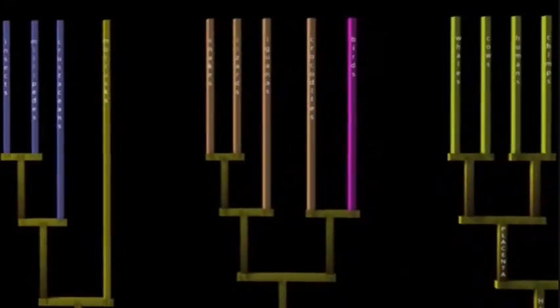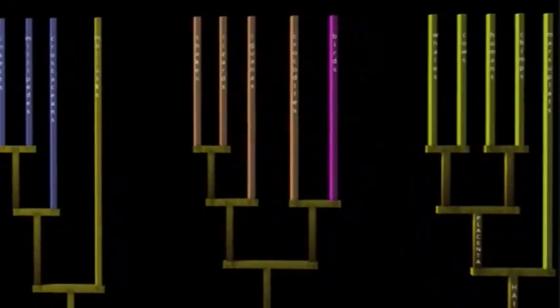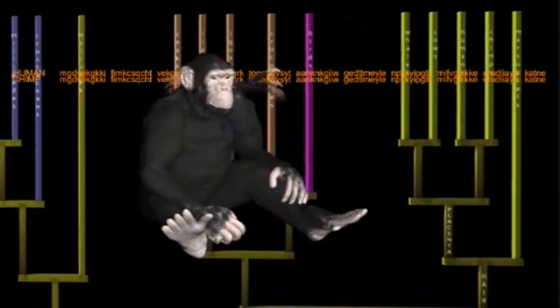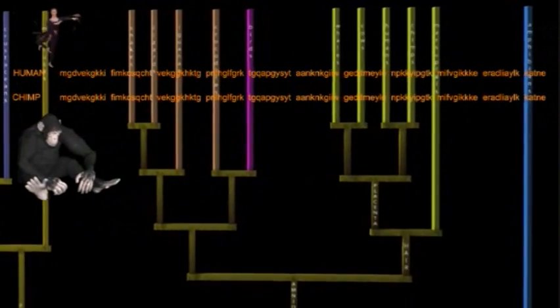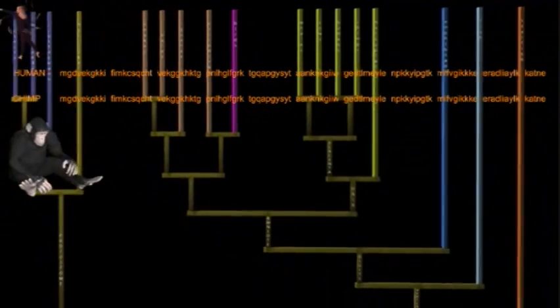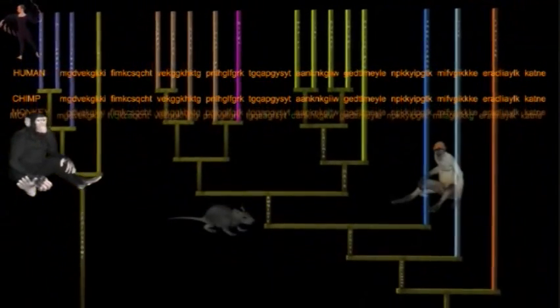But these mutations do tell the genealogy of the owners. For example, humans and chimps have exactly the same amino acid sequence for this protein. It hasn't mutated in the six or seven million years since our lines separated. And our common gene is at most 10 amino acids different from all other mammals, confirming our close relationship with other mammals.